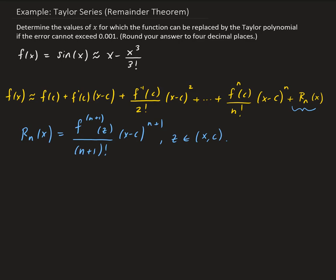In this example, we want to determine the values of x for which the function can be replaced by the Taylor polynomial if the error cannot exceed 0.001, and we want to round our answer to four decimal places. Basically, this problem is asking for a specific interval containing x such that for those given x values, the difference between the approximating function based on the Taylor polynomial and the actual function will be less than 0.001.